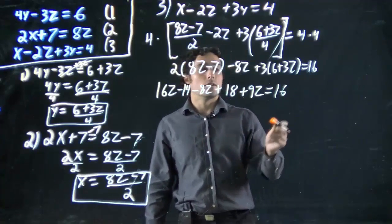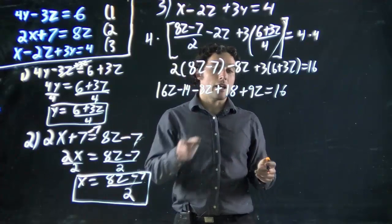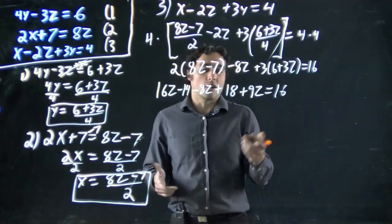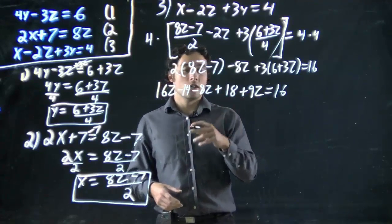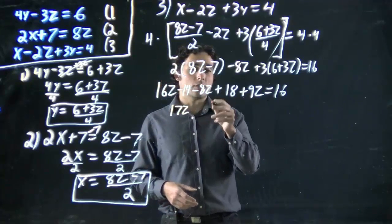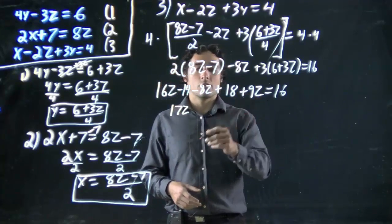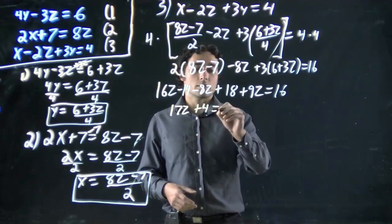Now we want to solve for z still. Like we were doing before, this is an equation, we want to solve for z. We have to multiply everything out, get rid of our brackets, multiply all the terms in. We're going to get 16z minus 14 minus 8z plus 18 plus 9z all equals 16. We now want to group all the terms together. 16z minus 8z plus 9z, or in other words 17z. And then we've got minus 14 plus 18, or in other words plus 4. All equals 16.